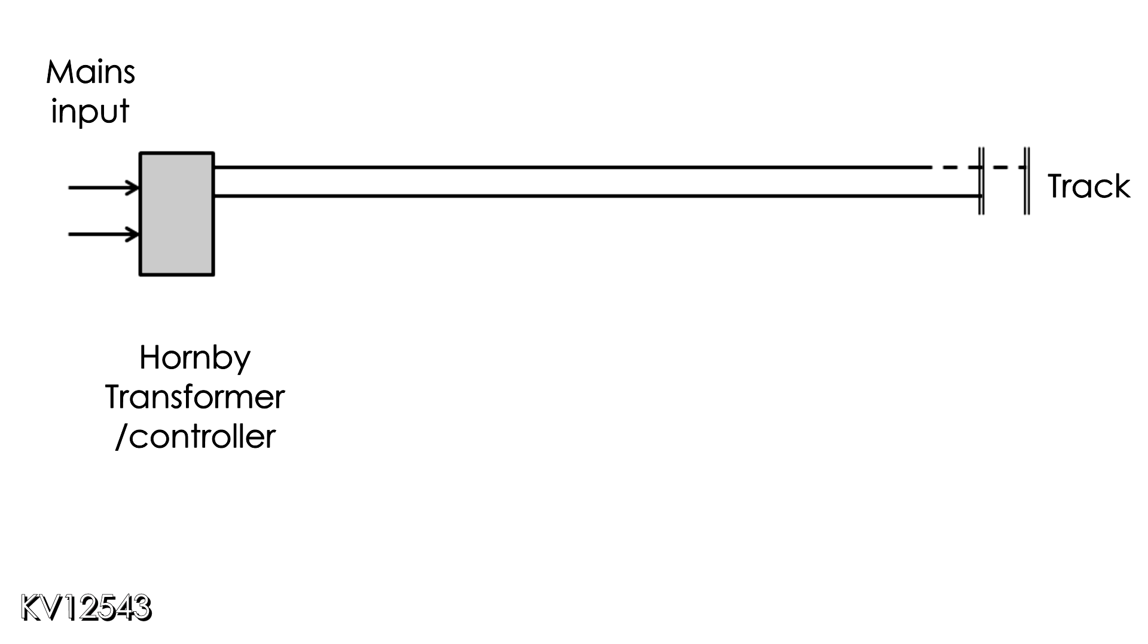The wiring for each circuit on the original layout was just about as basic as you can get. A combined transformer and controller wired directly to the track.